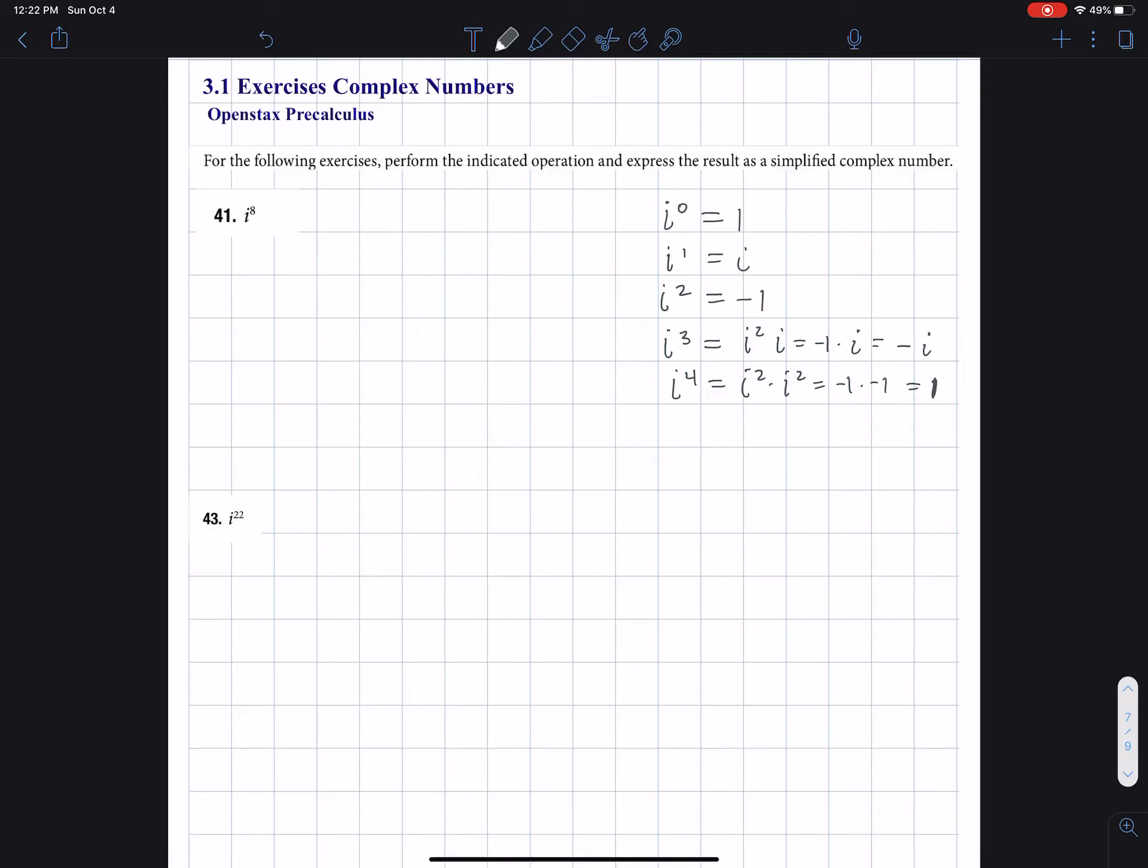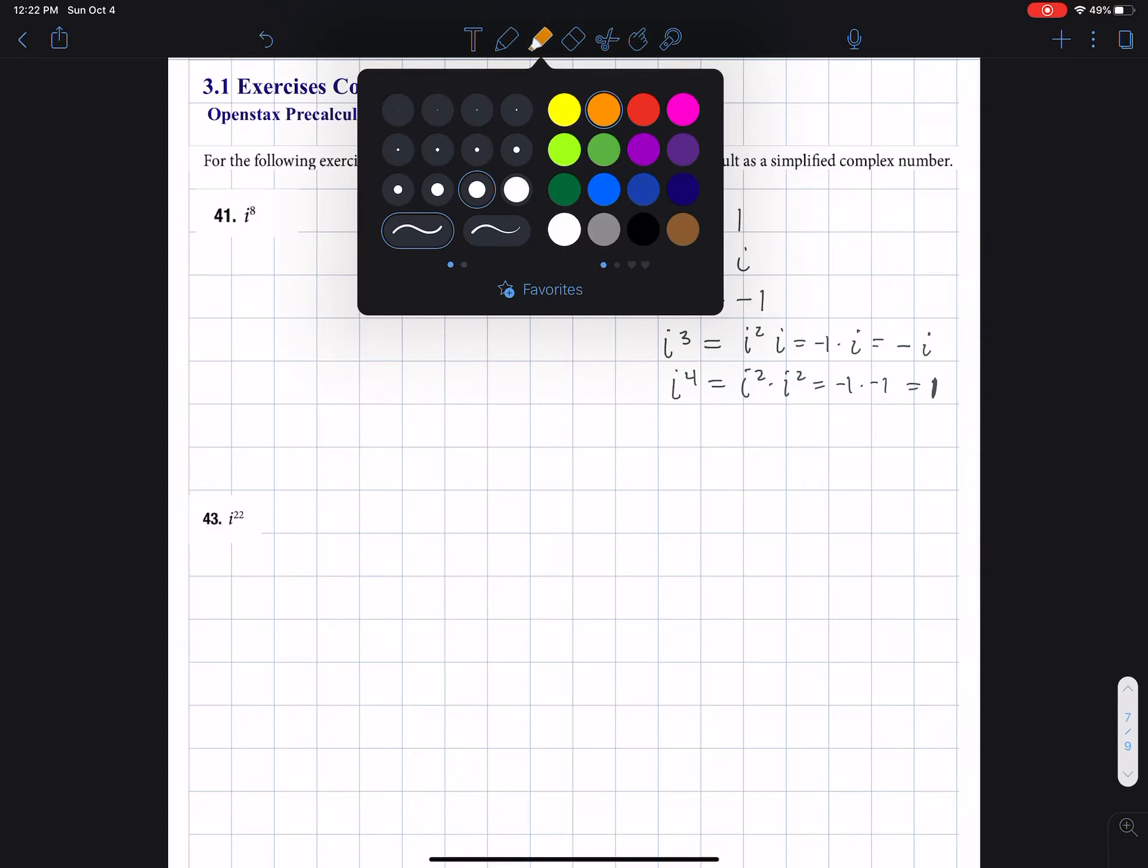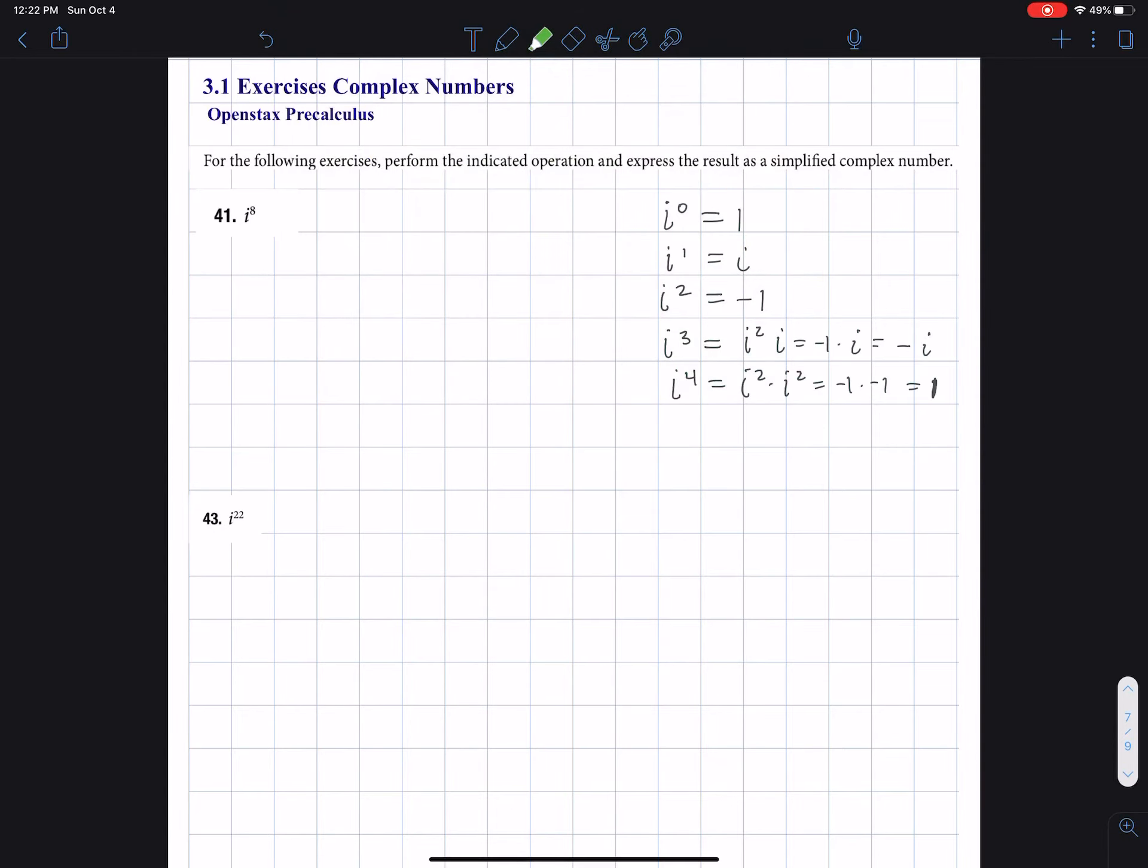Okay, so let's just look at this pattern. I had some stuff that I put in there that made it a little bit hard to see. But it goes one, i, negative one, negative i, and back to one.